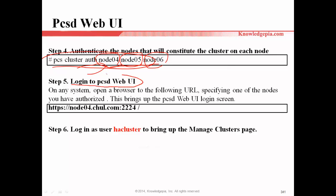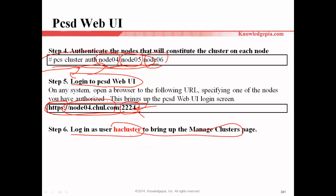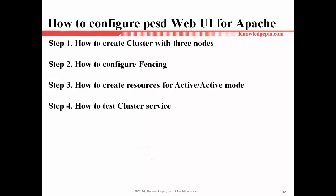Step five: log into the PCSD web UI. If we are successful up to step four, then now you can log into the PCSD web UI. For example, use the protocol https with the node hostname and port number 2224. Then you can log into the web UI. Step six: log in as user HA cluster to bring up the manage cluster page. The user HA cluster is the main user to control and manage the cluster service. When you log in, you need the password for this user. In this video, I will show you how to configure PCSD web UI for Apache.